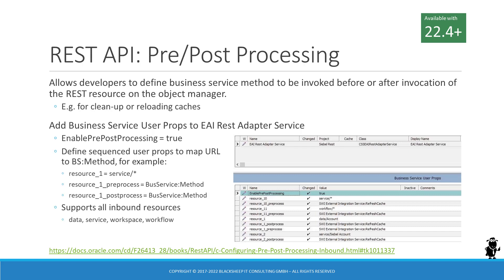After adding the enable pre-post processing property with a value of true, developers can define additional user properties to map URL patterns — for example, service slash asterisk — to a pair of business service methods: one for pre-processing and one for post-processing. The new pre- and post-processing feature supports all inbound REST resources such as data, service, workspace, and, just added in 22.3, workflow.